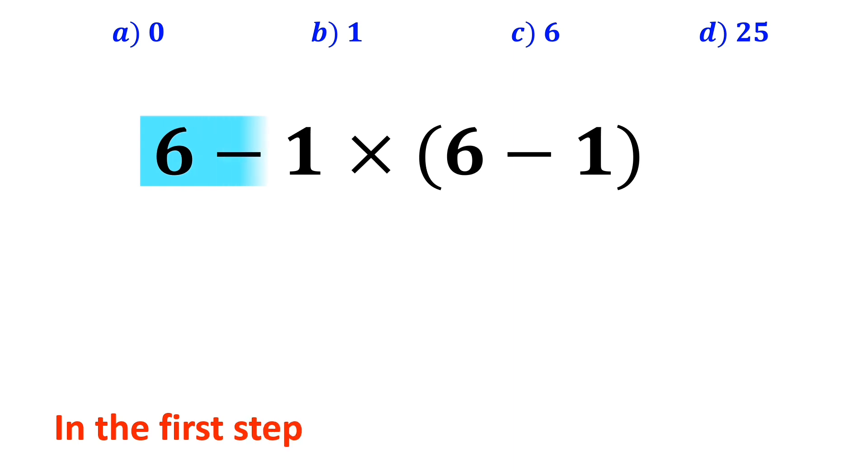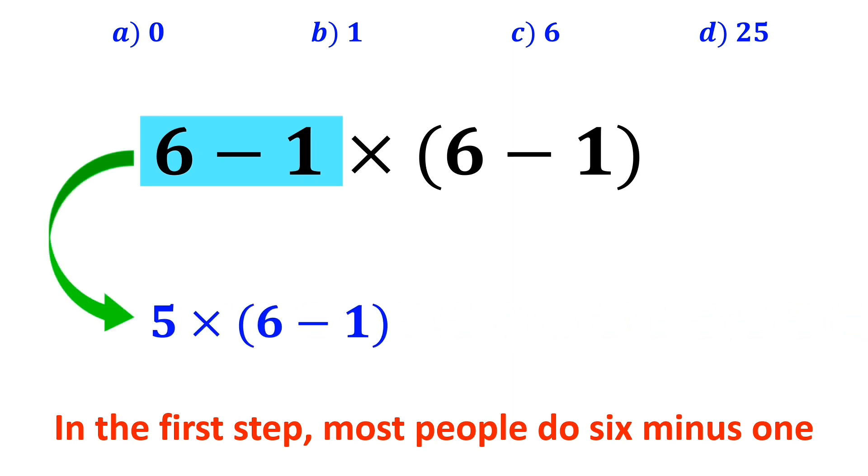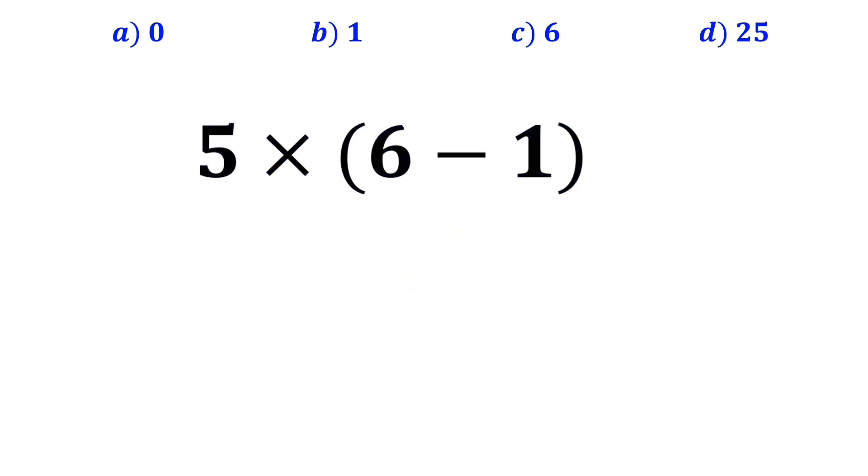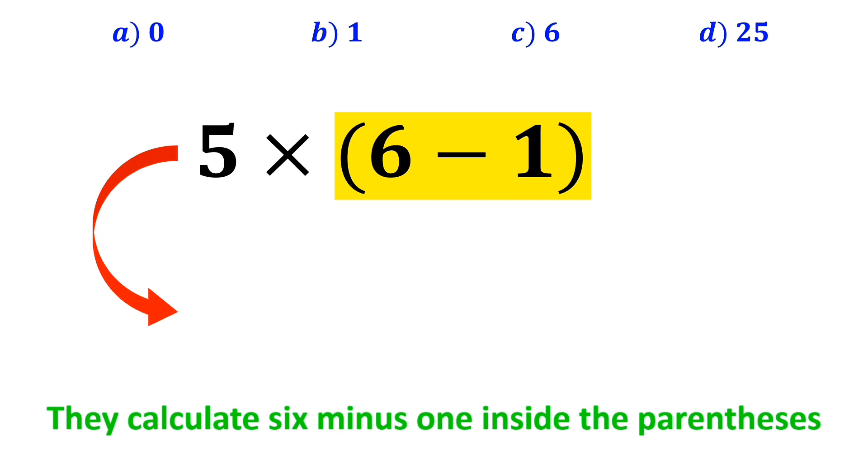In the first step, most people do 6 - 1, which I have highlighted in blue. So it becomes 5 × (6 - 1). In the next step, they calculate 6 - 1 inside the parenthesis, which becomes 5 × 5. And finally, the answer becomes 25.